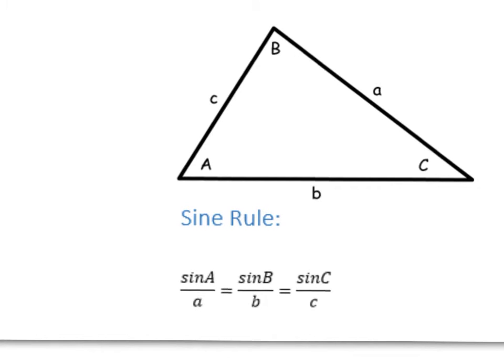Likewise, the sine rule says sine A over a equals sine B over b equals sine C over c. Again, I'll show you at the end where this rule comes from. But this is essential. Remember, your A's must be opposite each other, C's opposite, and B's opposite. Otherwise this won't work. Let's have a look at these being put into use with a question.